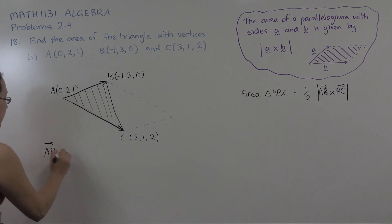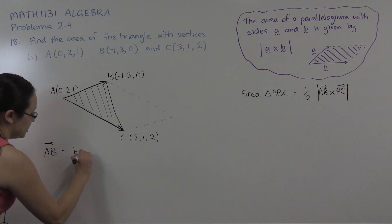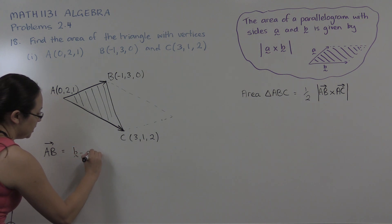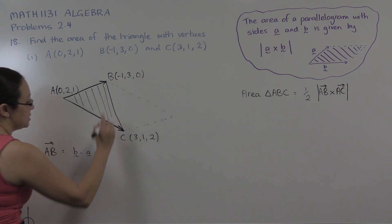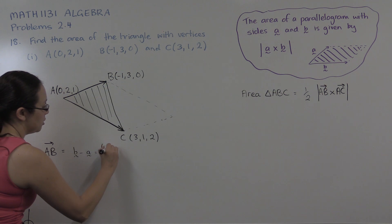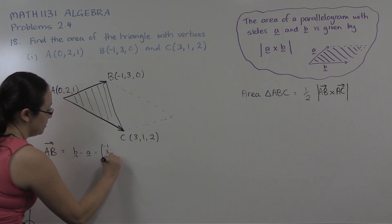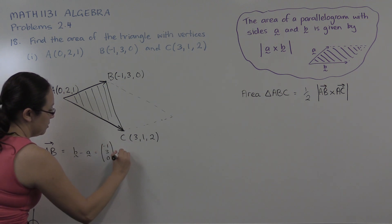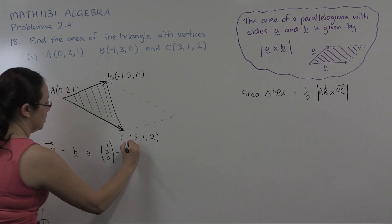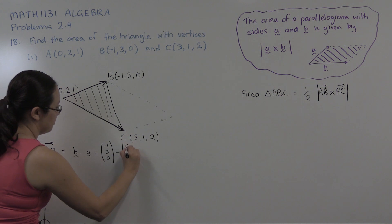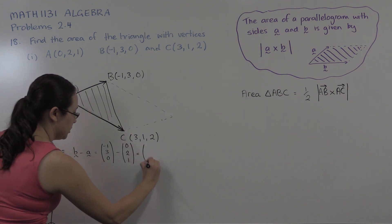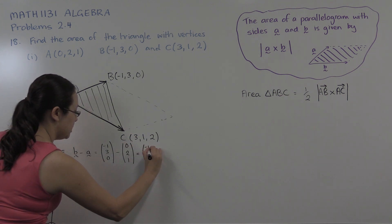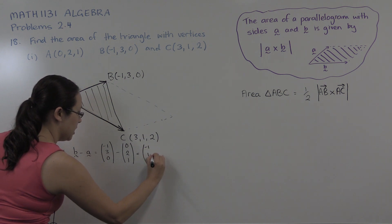The vector AB is the position vector of B minus the position vector of A, written in column form. So that gives us (-1, 1, -1).